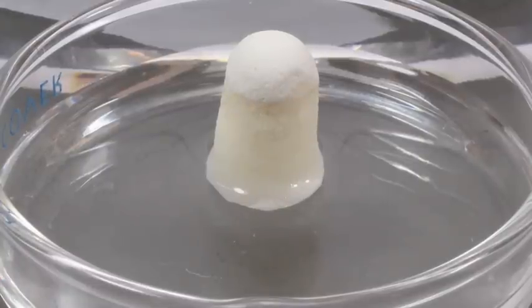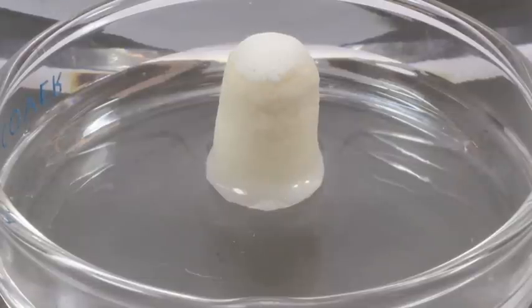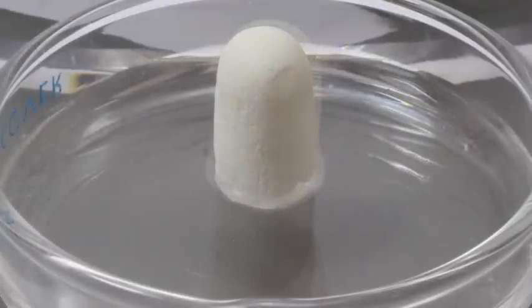Once placed into a debrided socket, the Osteogen Plug will absorb blood flow and expand to fill the defect, increasing in size and eliminating any potential gaps. Compare the Osteogen Plug before and after fluid absorption to see the change in size.